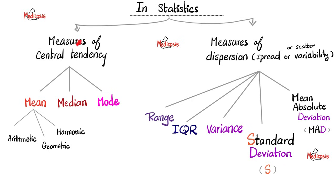In statistics, we have measures of central tendency such as the mean, the median, and the mode. The mean is subdivided into arithmetic mean, geometric mean, and harmonic mean, among others. And we have measures of dispersion — or measures of spread, or measures of variability, or measures of scatter — and these include range, interquartile range, variance, standard deviation (which is the square root of the variance), as well as the mean absolute deviation, or MAD, which drives most students insane.